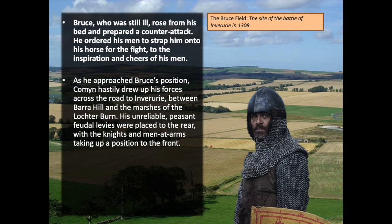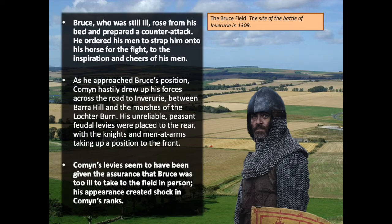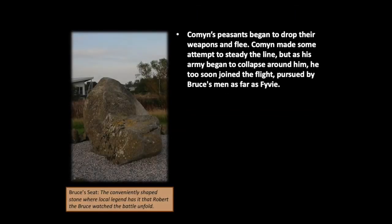Comyn's levies seem to have been given the assurance that Bruce was too ill to take the field in person. You wouldn't want to fight in a battle against the king of the land — but if your lord tells you he's on his deathbed and this will be an easy fight, you might feel differently. And then you get there and see the king on the other side of the battlefield on his horse, with his army pumped for the fight — you're probably going to have second thoughts. That appears to be what happened to Comyn's army. His appearance created a shock amongst the Comyn ranks, and Comyn's peasants began to drop their weapons and flee. They saw the king and they bottled it.